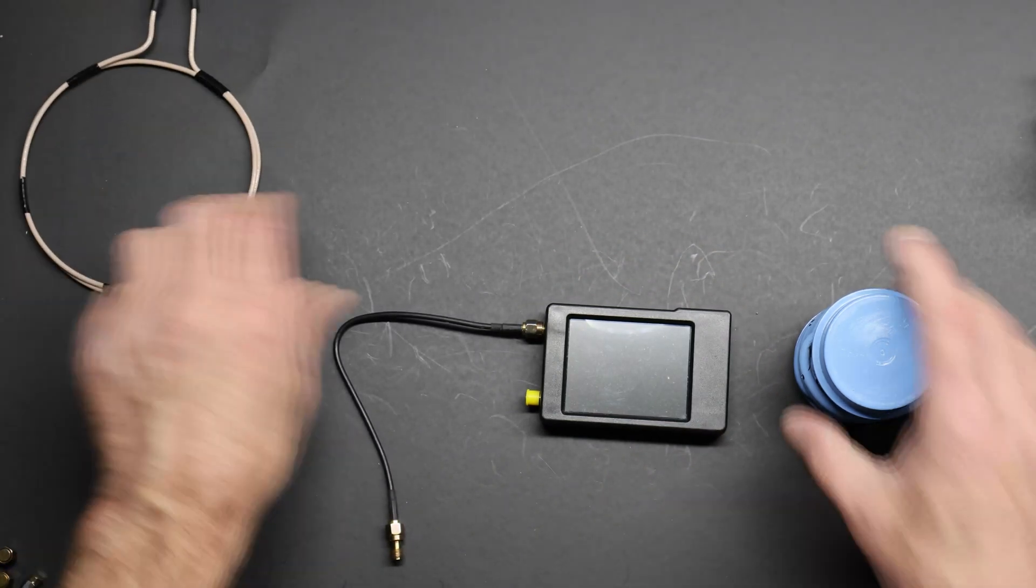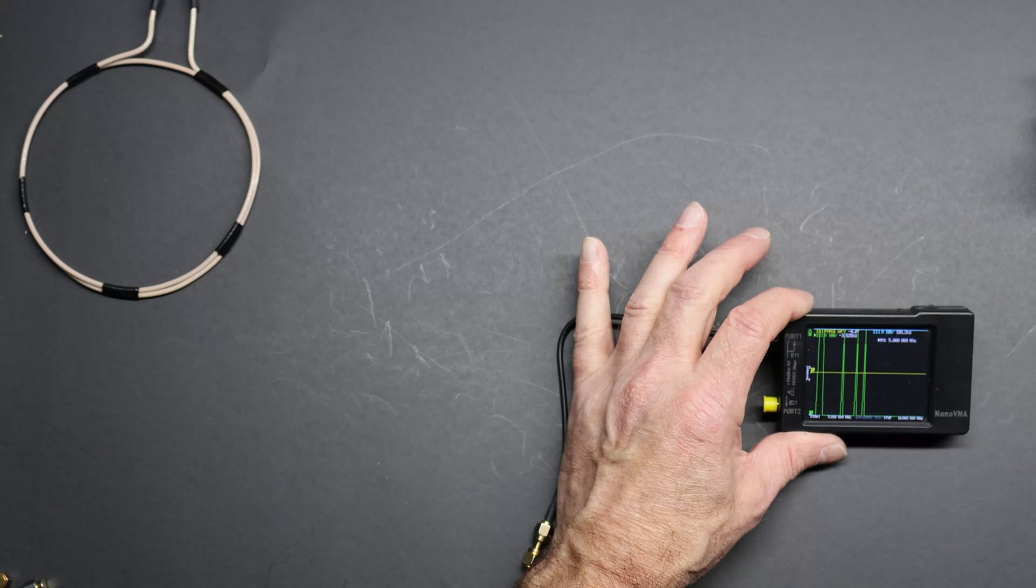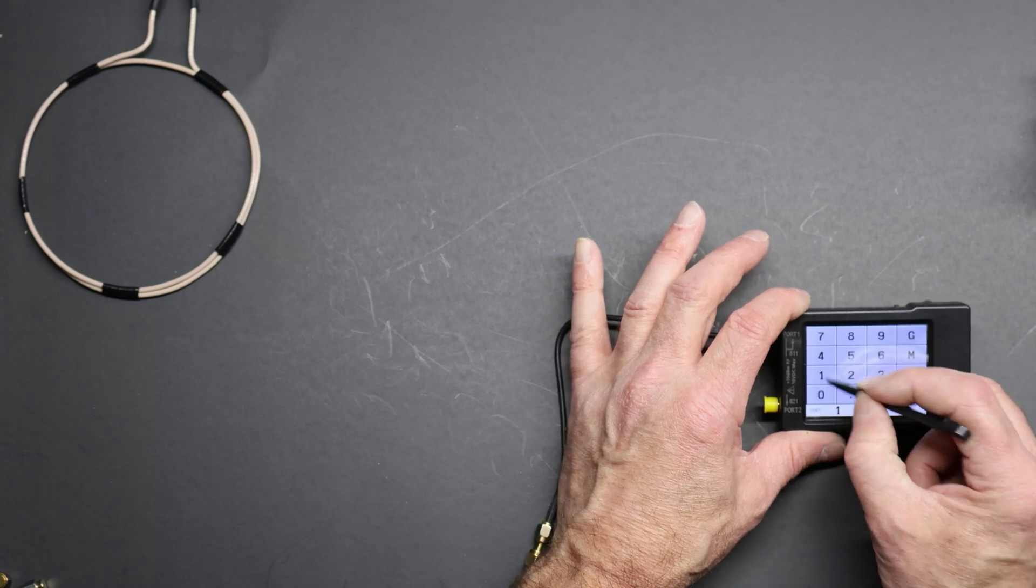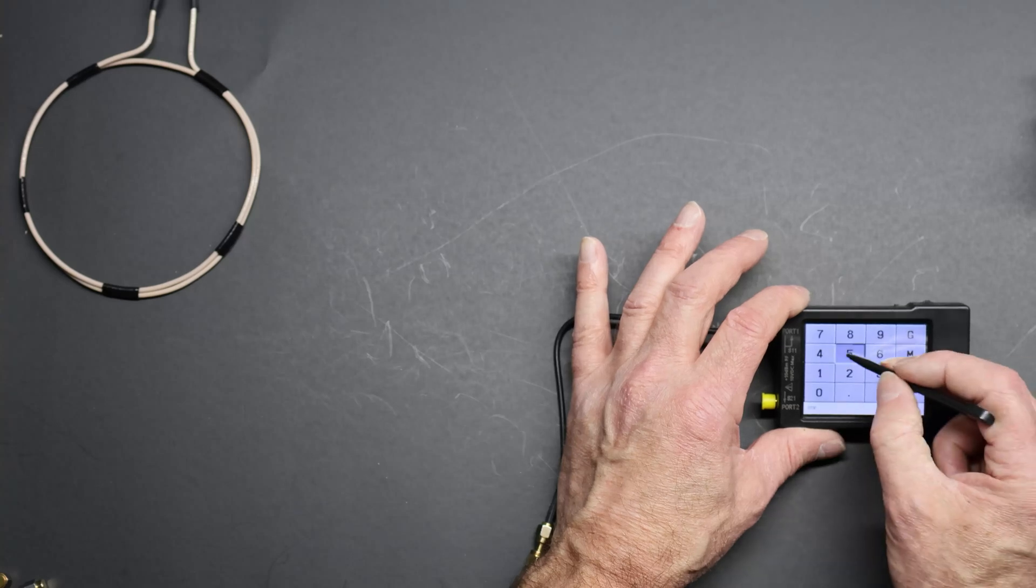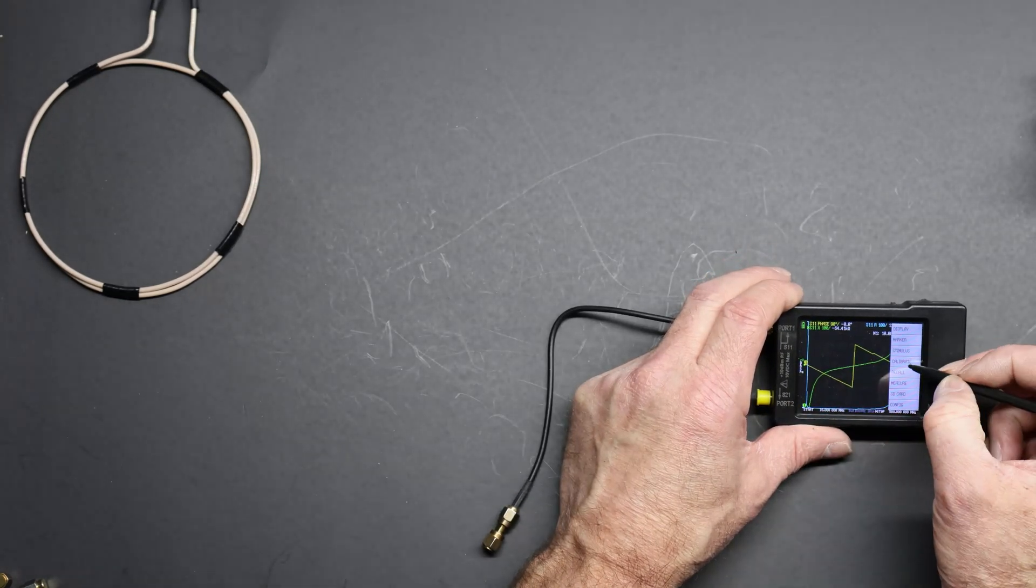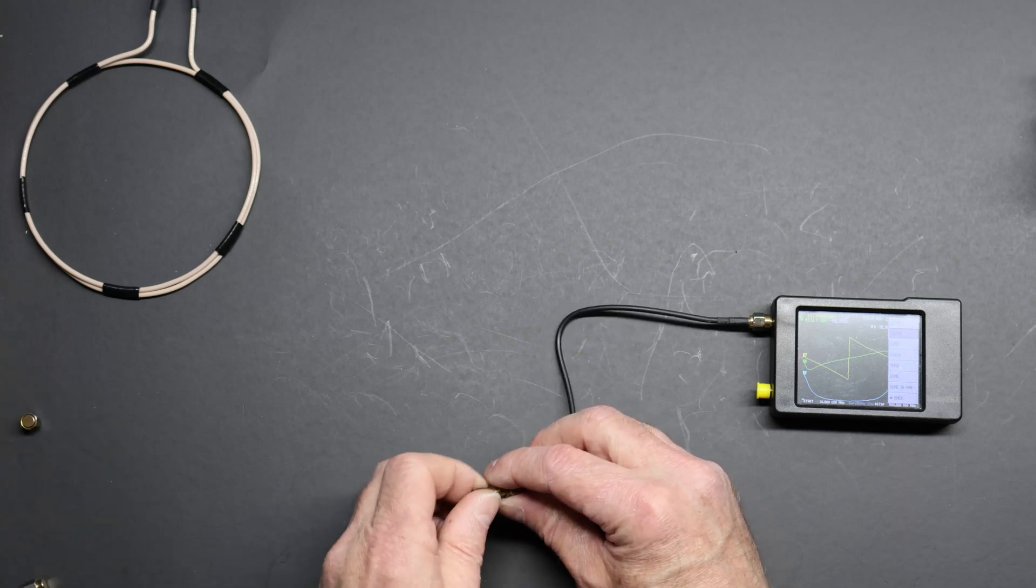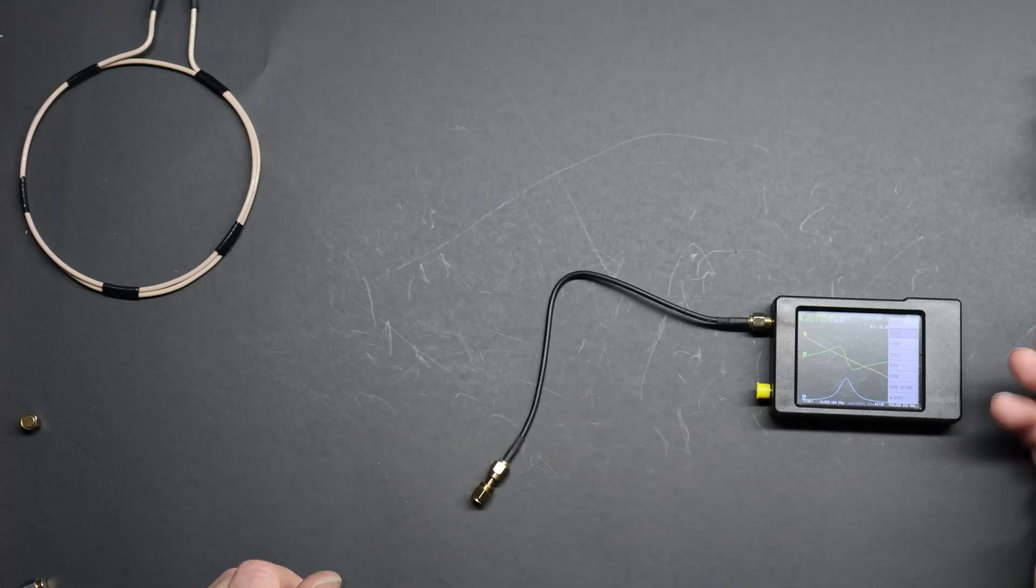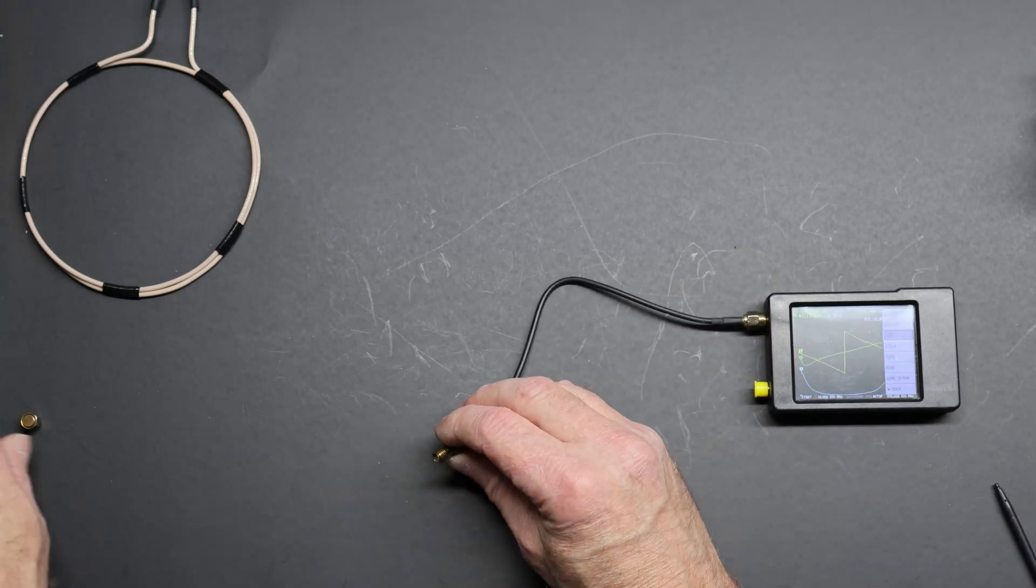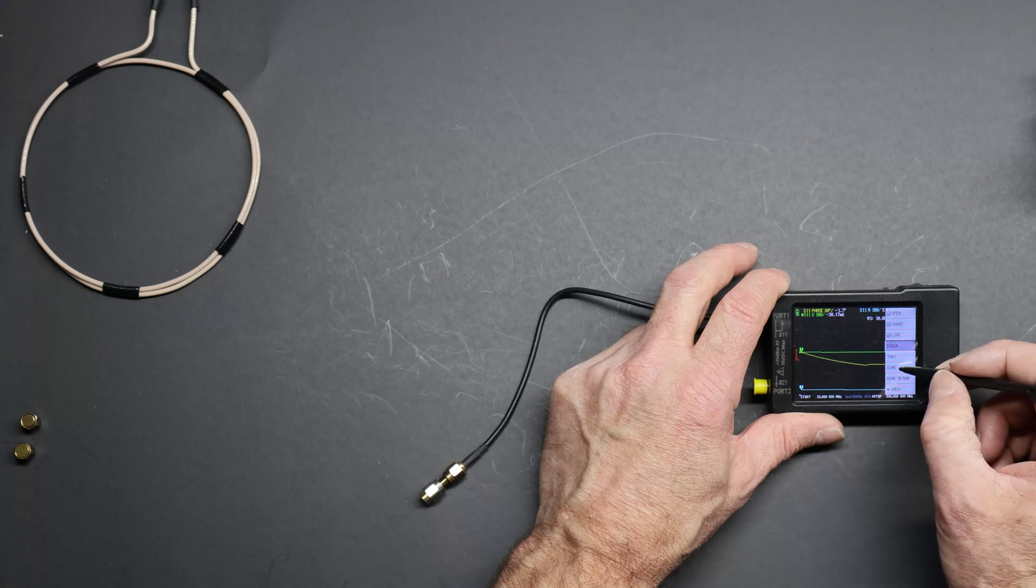Okay, let's calibrate and see if it works. I'm going to be measuring from a 40 meter trap up to a UHF antenna, so let's go 10 megahertz up to 500 megahertz, which is a very broad swath. Calibrate the open, and the short, and 50 ohms. And we'll save it.